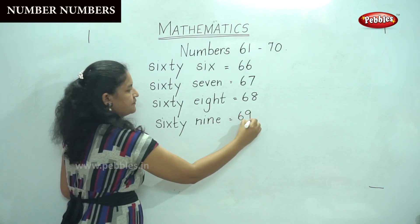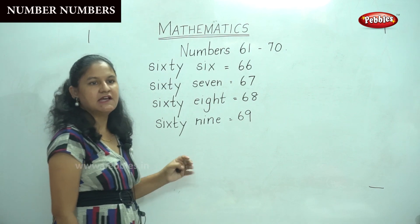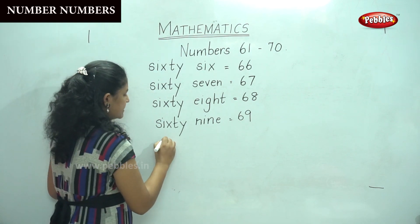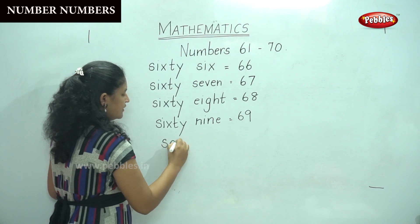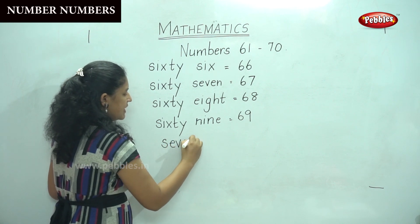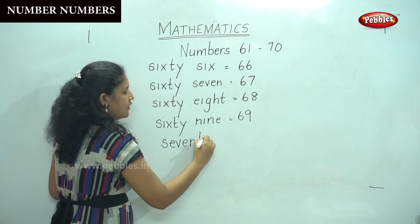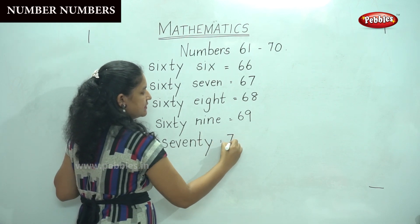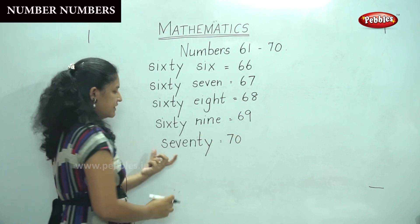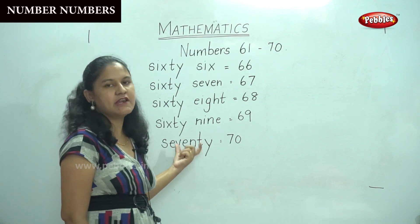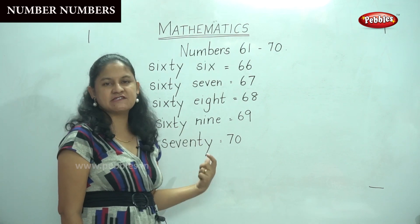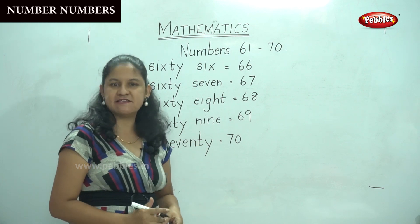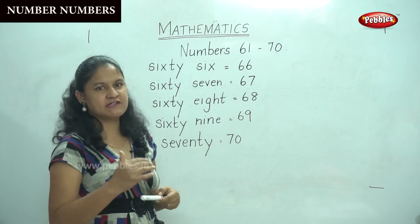And the next number is number 70. SEVENTY — S, E, V, E, N, T, Y — 70. Now we have already learnt the spelling for number 7, so you just have to add T, Y to make it 70. So have you understood?